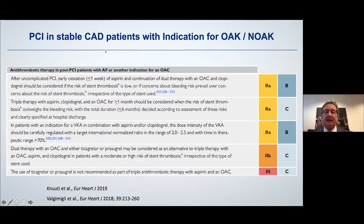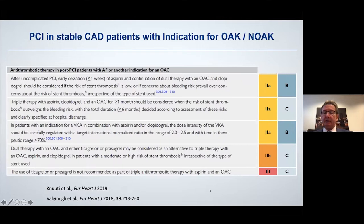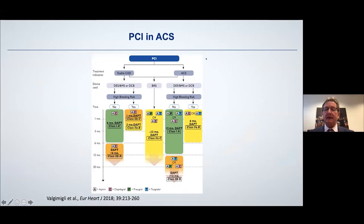For patients with unstable coronary artery disease and an indication for anticoagulation, it is again a huge problem — we don't have really enough clear data. What is very important is that you should never use a triple therapy with ticagrelor or prasugrel, aspirin, and an anticoagulant. We have seen a few such cases in daily routine with a really increased risk for bleeding.